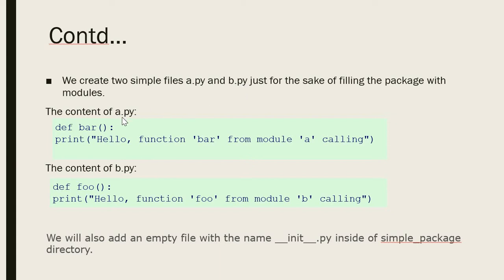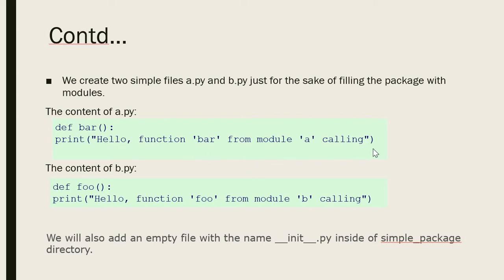The file a.py contains the function bar — def is the keyword, bar is the function name. In the print statement, we have "Hello function bar from module a calling." When this module is executed, this will be the statement that appears on the screen.